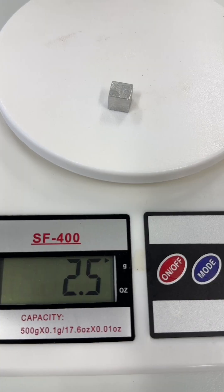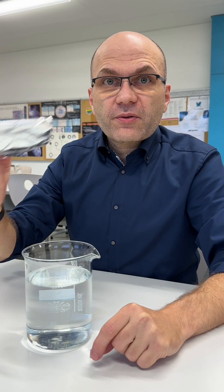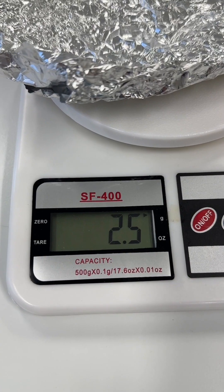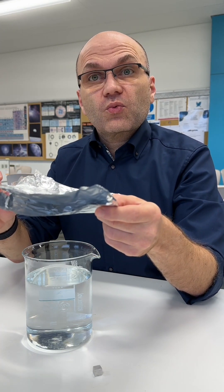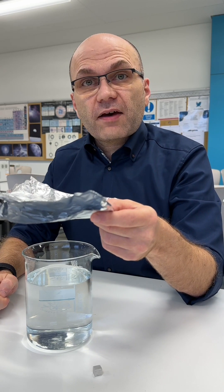Back to the aluminum block. This block has a mass of 2.5 grams, and here is an aluminum foil of identical mass. If I manage to shape this aluminum foil in such a way that it displaces sufficient water so it compensates for the pull of gravity, it will float.